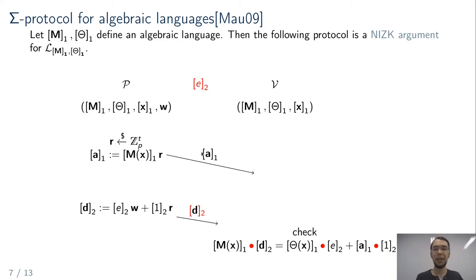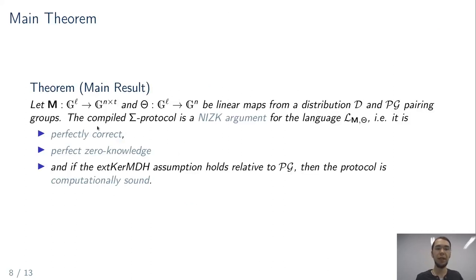Correctness holds easily, and zero-knowledge follows by giving the simulator E in Z_p rather than in G2 as a simulation trapdoor, using the underlying special honest verifier simulator. The open question is how to prove soundness. We want to exploit that E and A must have a non-trivial relationship, and reduce this to a new assumption: the extended kernel matrix Diffie-Hellman assumption. This is an extension of the kernel matrix Diffie-Hellman assumption.